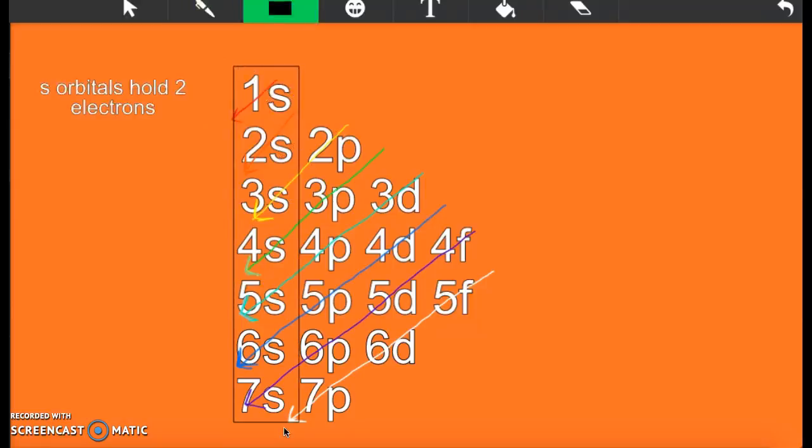Anything in these s orbitals can only hold 2 electrons. So 1s can hold 2, 2s can hold 2, 3s can hold 2, 7s can only hold 2. If you have more than 2 electrons, you cannot stuff them into this subshell. That's just your s's.